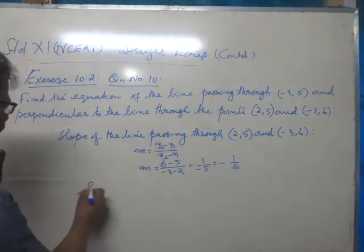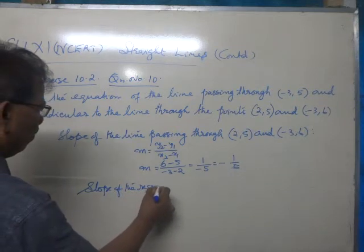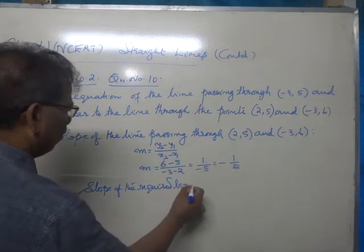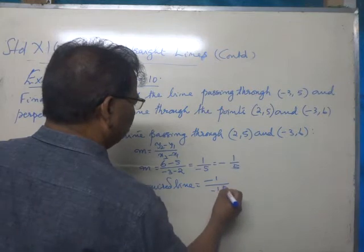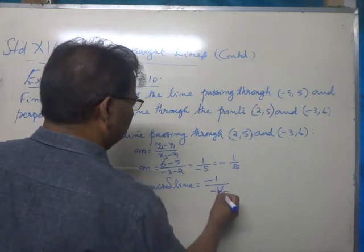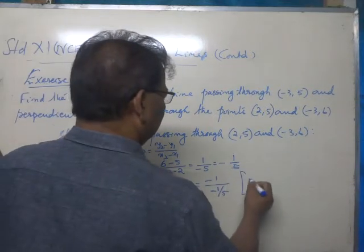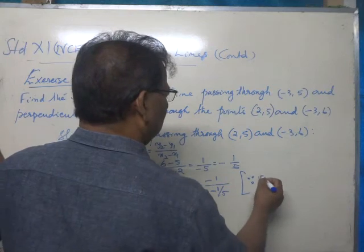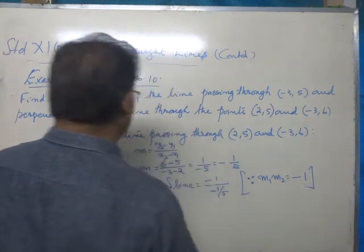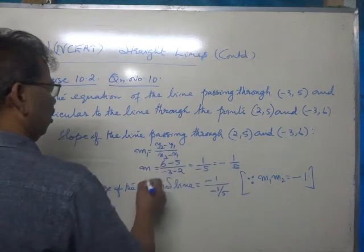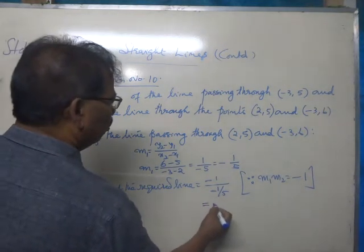Therefore, the slope of the required line can be calculated as equal to -1 divided by -1/5. Why? The reason is M1 times M2 is equal to -1. I shall take this as M1, that is equal to 5.